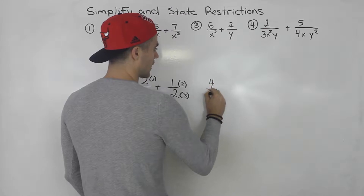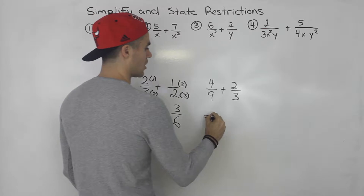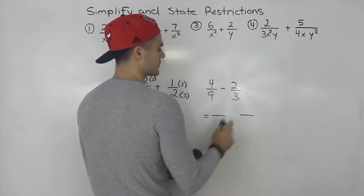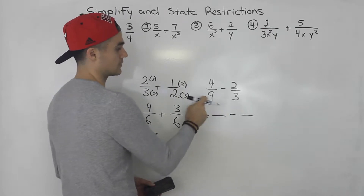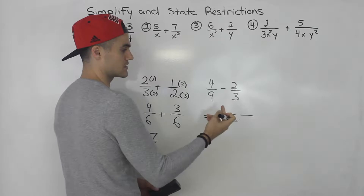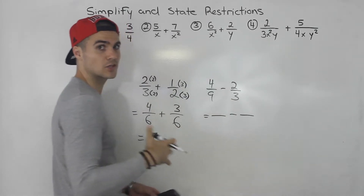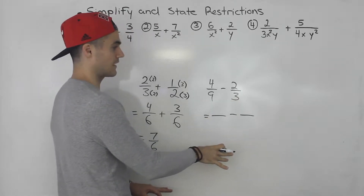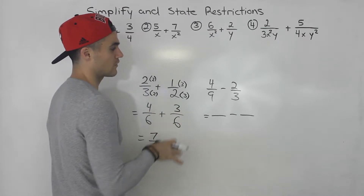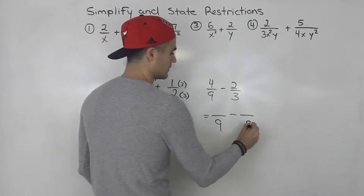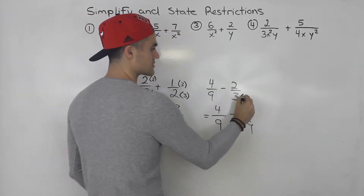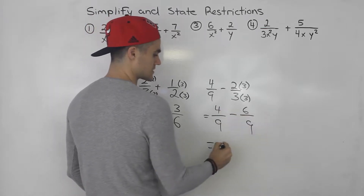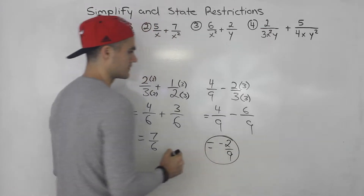What if I have 4 over 9 minus 2 over 3? The lowest common denominator is 9, because 9 goes into 9 one time and 3 goes into 9 three times. You could also multiply 9 times 3 to get 27, but that's not the lowest common denominator — you'd have to simplify further at the end. It's easier to find the LCD from the get-go. So 4 over 9 stays, and I multiply the 3 by 3 to get 9, so I multiply the top by 3 as well. 4 minus 6 is negative 2 over 9.